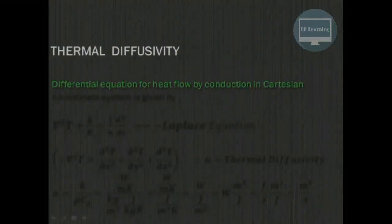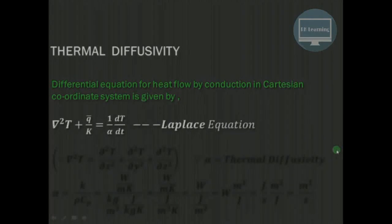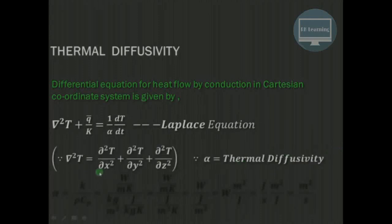Today we will try to understand what is the meaning of thermal diffusivity. We know that the differential equation of heat flow by conduction in the Cartesian coordinate system is given by the Laplace equation: ∇²T + q̄/k = (1/α)(∂T/∂t). Here ∇²T is the Laplace operator, equal to ∂²T/∂x² + ∂²T/∂y² + ∂²T/∂z², and the term alpha (α) is known as the thermal diffusivity.